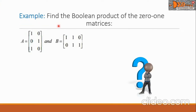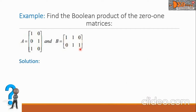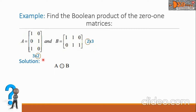Let us see this example: find the Boolean product of the zero-one matrices A = [[1,0],[0,1],[1,0]] and B = [[1,1,0],[0,1,1]]. Matrix A is a three by two matrix, meaning three rows by two columns, while matrix B is a two by three matrix, meaning two rows and three columns. Remember that in the multiplication of matrices A and B, the number of columns of A must equal the number of rows of B.